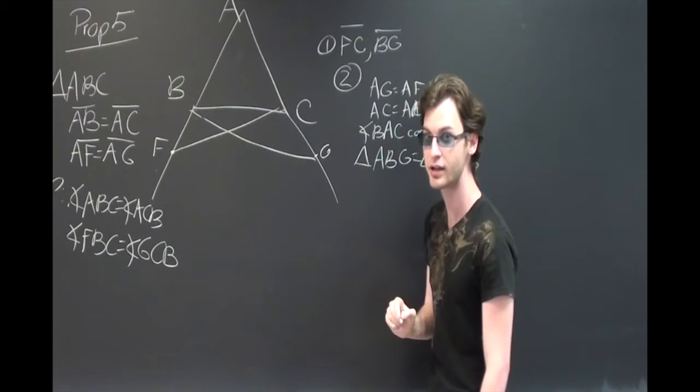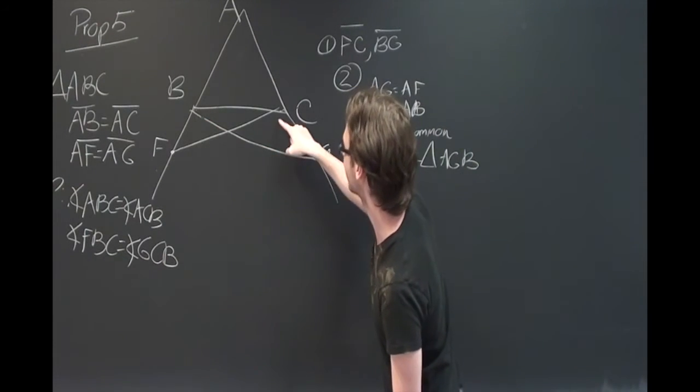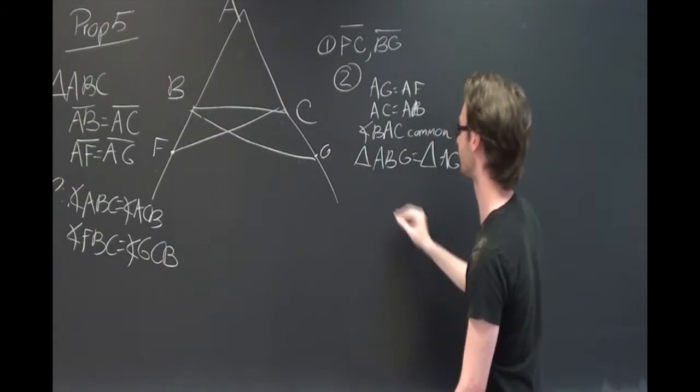And because the entire triangles are equal, we know that base BG and base CF are equal to each other.